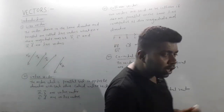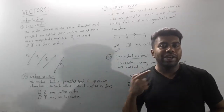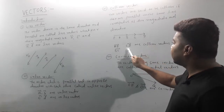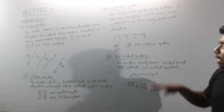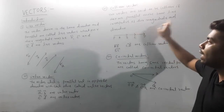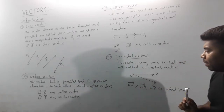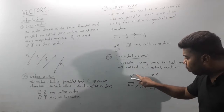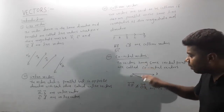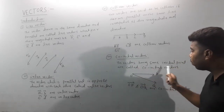Next is the collinear vector. Collinear means on a single line. Vectors are said to be collinear if they are parallel to the same line, irrespective of their magnitude and direction. Also, vectors having the same initial point — for example, both starting from point O — are called co-initial vectors.